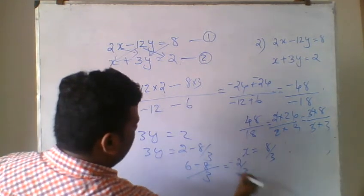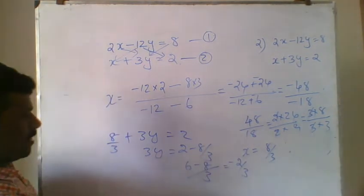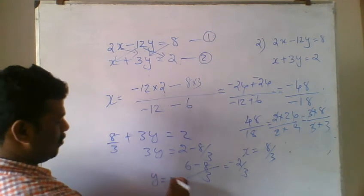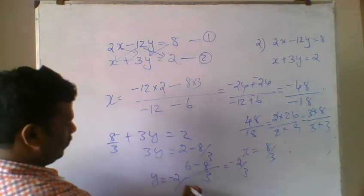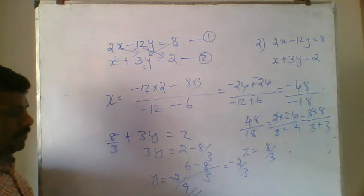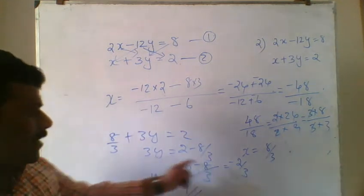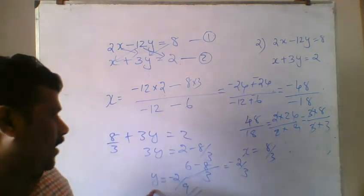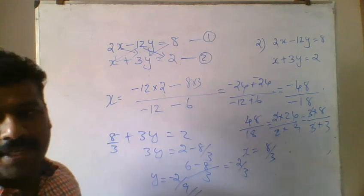So minus 2 by 3 is equal to 3y. Then y is equal to minus 2 by 3 divided by 3, so y is equal to minus 2 by 9. I think it is clear for everyone.